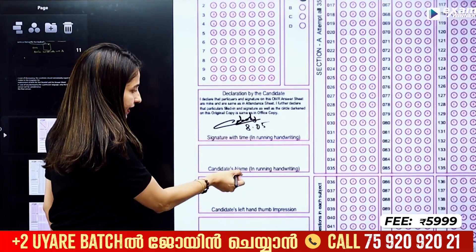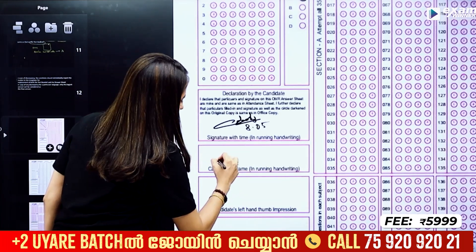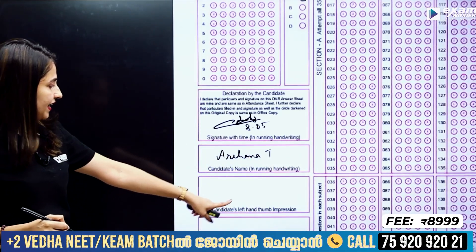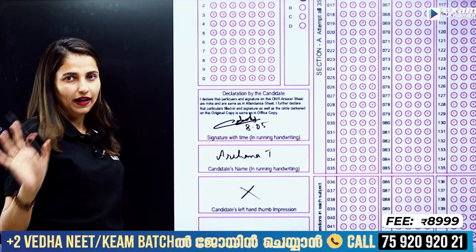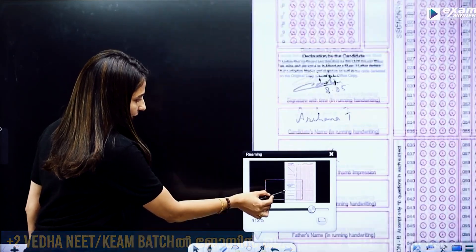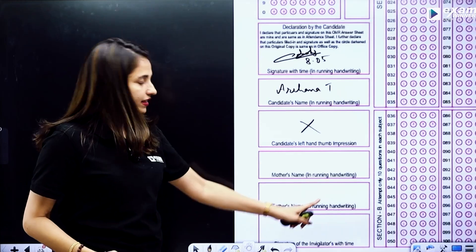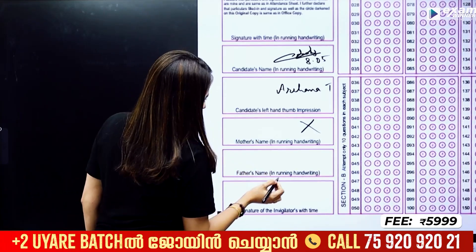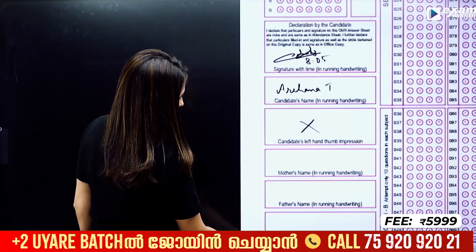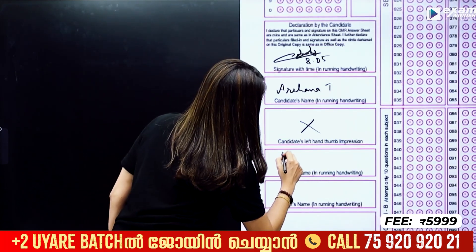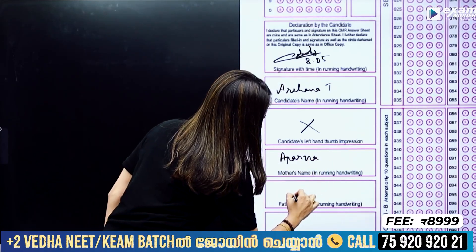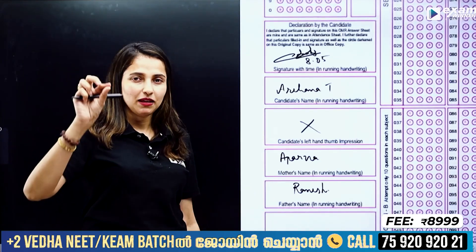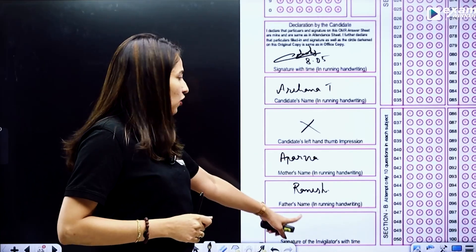Write the candidate's name in running handwriting. The candidate's left-hand thumb impression is also required. You provide your name, your mother's name in running handwriting, and your father's name in running handwriting. For example, mother's name is Aparna and father's name is Ramesh. Finally, the invigilator will sign with the time in your classroom — the invigilator will sign and complete that section.